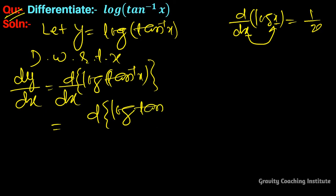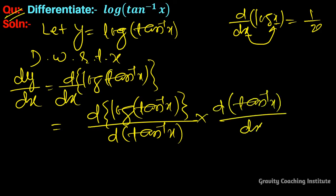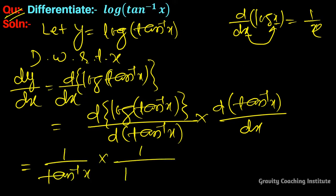Applying the chain rule: we get 1 upon log(tan inverse x), multiplied by 1 upon tan inverse x, into the derivative of tan inverse x. The derivative of tan inverse x is 1 upon (1 plus x squared). So this gives us 1 upon tan inverse x into 1 plus x squared.